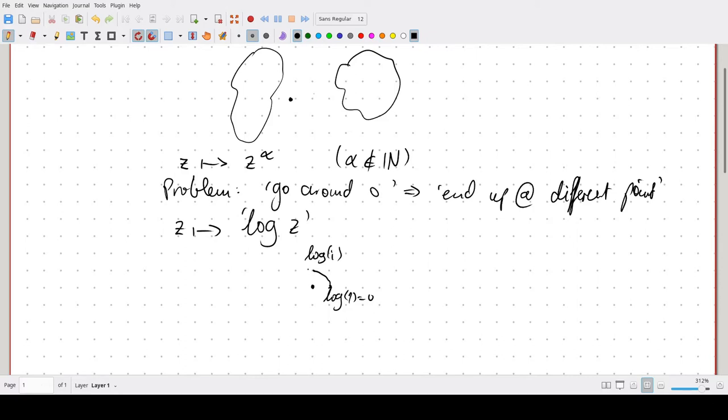The absolute value is one so the real part is still zero but the imaginary part is the argument which is pi over two, so pi over two times i. And then you go further, you end up at minus one. Log minus one is, well, similar argument, pi i. And then you complete the circle and you get log one is two pi i, which uh hmm yeah okay that's a problem.